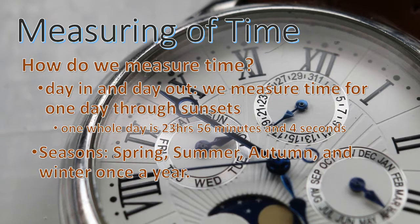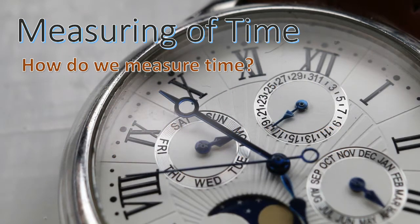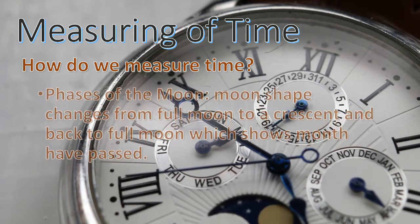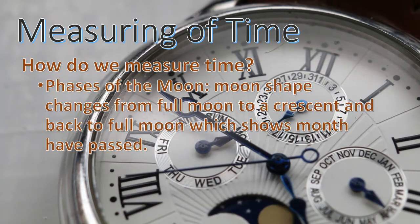In one year we have spring, summer, autumn, and winter. Phases of the moon — like the shape from full moon to a crescent and back to full moon again — show that one month has passed.